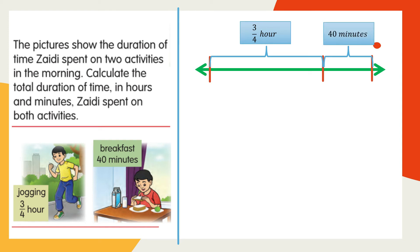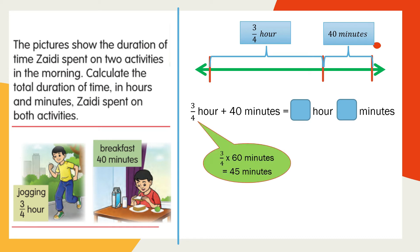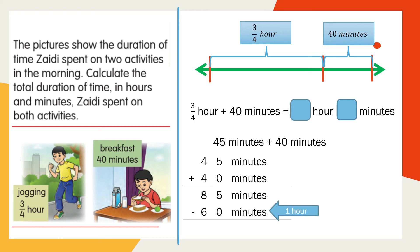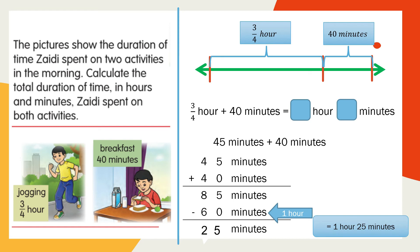When you want to add, make sure the units are the same. Convert three-quarters of an hour to minutes — you get 45 minutes. Now 45 minutes plus 40 minutes gives 85 minutes. Convert 85 minutes to hours and minutes: 60 minutes is one hour, so the answer is one hour 25 minutes. The total duration Zaidi spent on both activities is one hour 25 minutes.